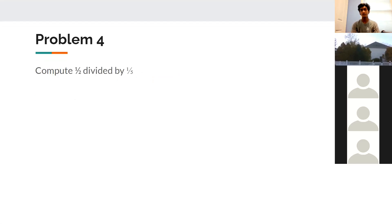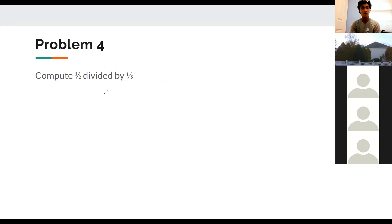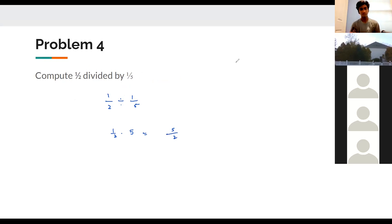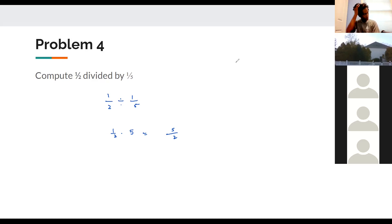A quick conceptual problem: compute 1/2 ÷ 1/5. Dividing by 1/5 is the same as multiplying by 5, so the answer is 5/2. If you're not familiar with fraction operations, read the textbook or check the earlier pre-algebra class recordings on the Alphademic website.